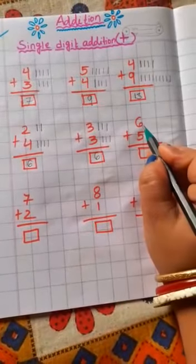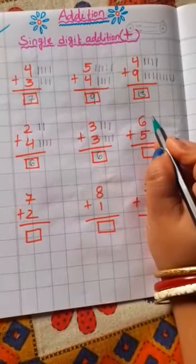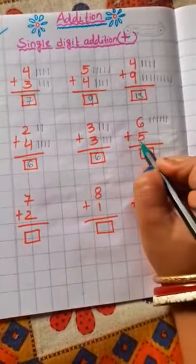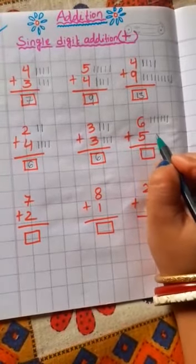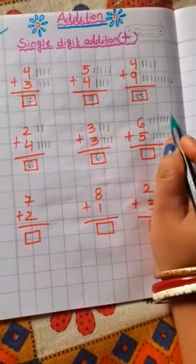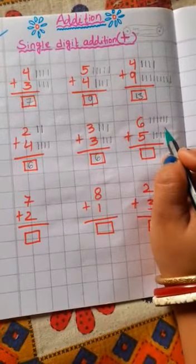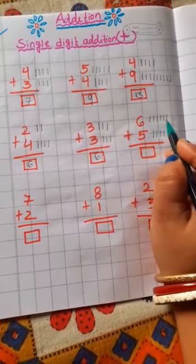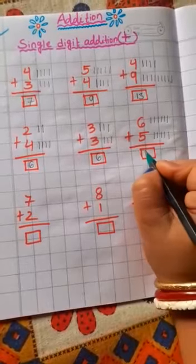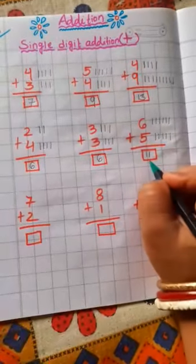Now next number. Which number is this? 6. You draw here how many lines? 6 lines. Very good: 1, 2, 3, 4, 5, 6. Which number is this? 5. You draw here 5 lines: 1, 2, 3, 4, 5. Now count all the lines together: 1, 2, 3, 4, 5, 6, 7, 8, 9, 10, 11. Your answer is 11. 6 plus 5 is equal to 11.